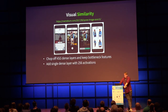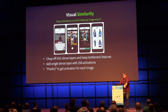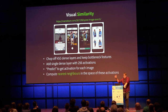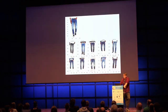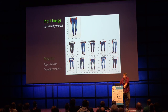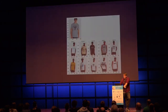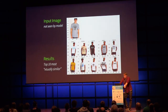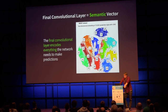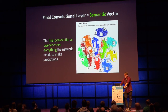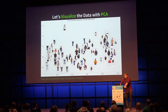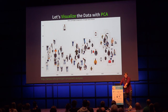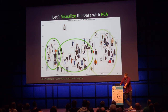To do image similarity search, we chop off the dense layers and don't add a new softmax — we just keep the dense layer, say 256 neurons. We run an image through the network to get 256 numbers, then compute nearest neighbors using dot product. The input image not seen by the model finds the most similar images — all jeans with the same style, or a graphic t-shirt matched to other graphic t-shirts. We can also apply PCA to those 256-dimensional activations to visualize clusters: sweatshirts, jackets, jeans, accessories.